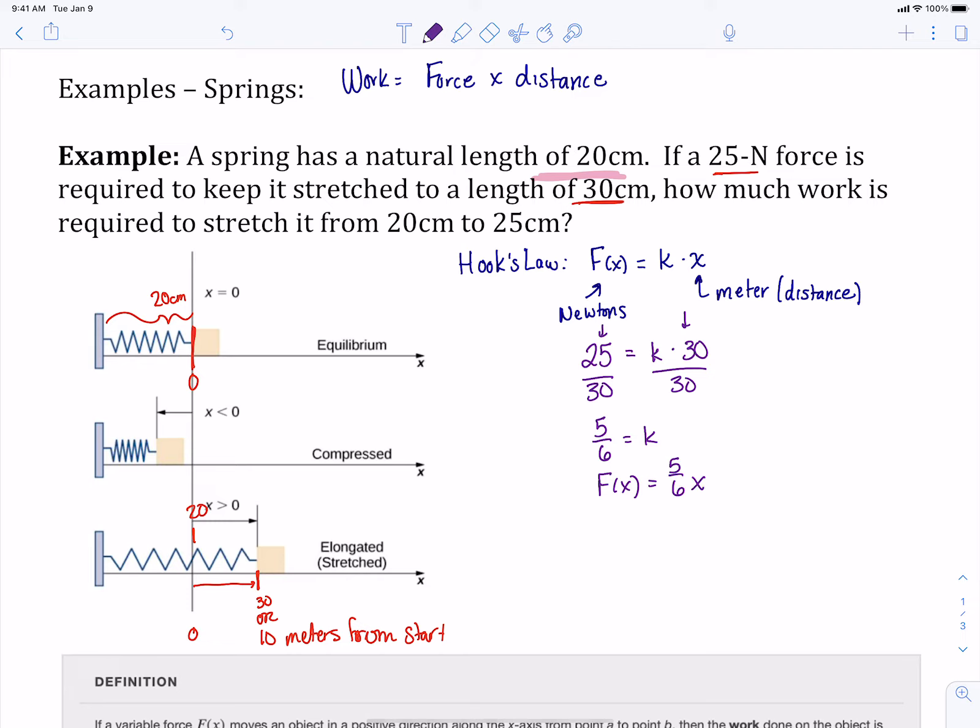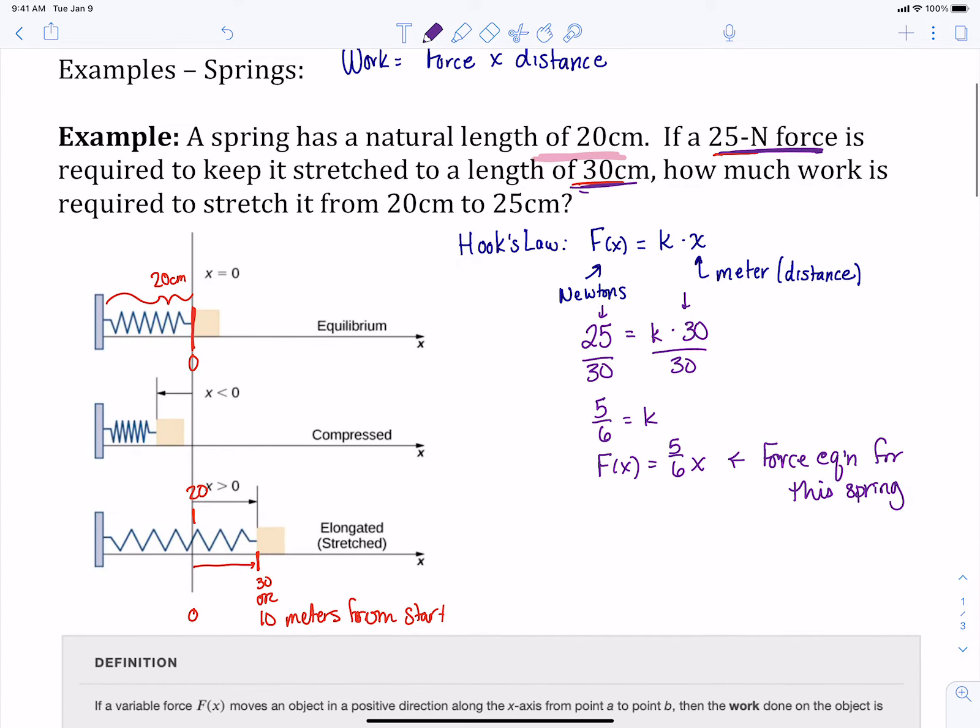This gives us for this particular spring, so this is only for this particular spring, this is the force equation for this spring. Each spring we have is going to have a different force equation. So they're going to have to give us some information about how much force it takes to lengthen it, or how much work's done to lengthen something.